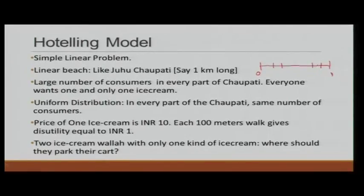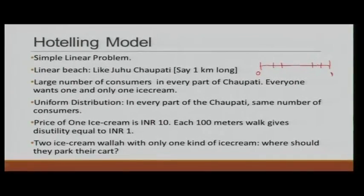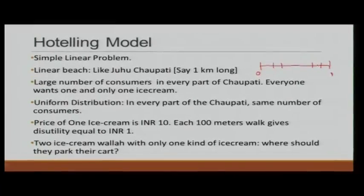The price of one ice cream is exactly 10 rupees. And because people are lazy and do not want to walk, we assume that each 100-meter walk gives a utility loss equivalent to 1 rupee — in other words, walking 100 meters is equivalent to a 1 rupee cost. For example, if I have to walk 500 meters to get an ice cream, I spend 10 rupees on the ice cream plus 5 rupees for walking, making the total cost 15 rupees.